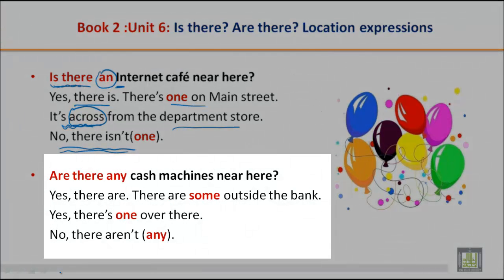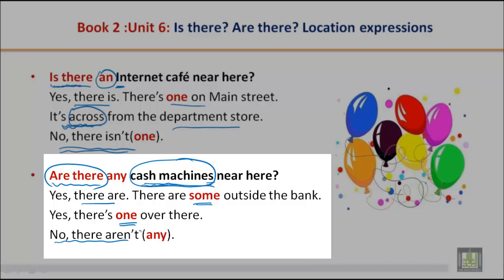Are there any cash machines near here? Yes, there are — there are some outside the bank. There is one over there. Cash machines are like ATMs. For plurals — notice 'machines' — we use 'are there'. If the answer is yes: Yes, there are, there are some outside the bank. If there are none, you say: No, there aren't.